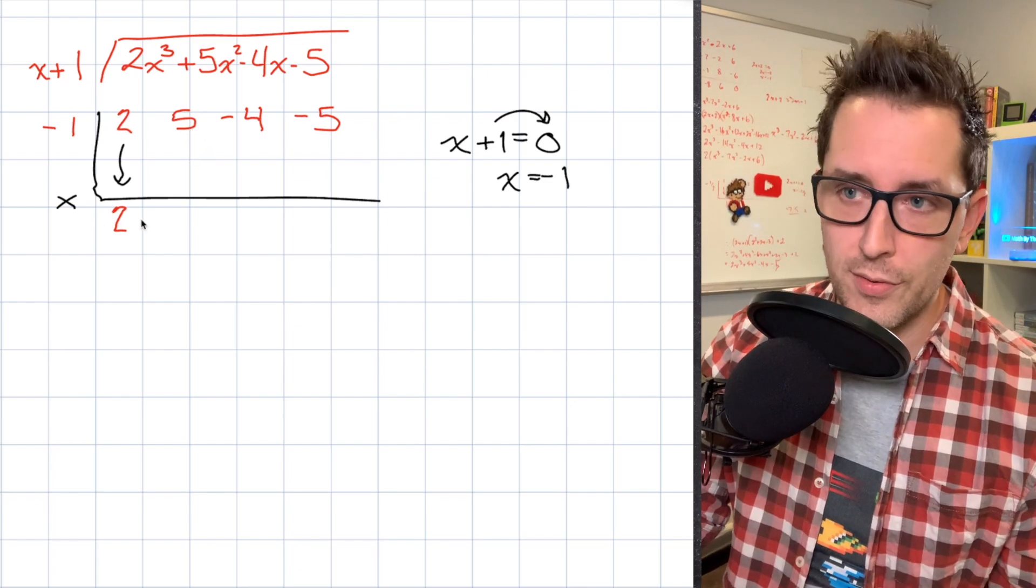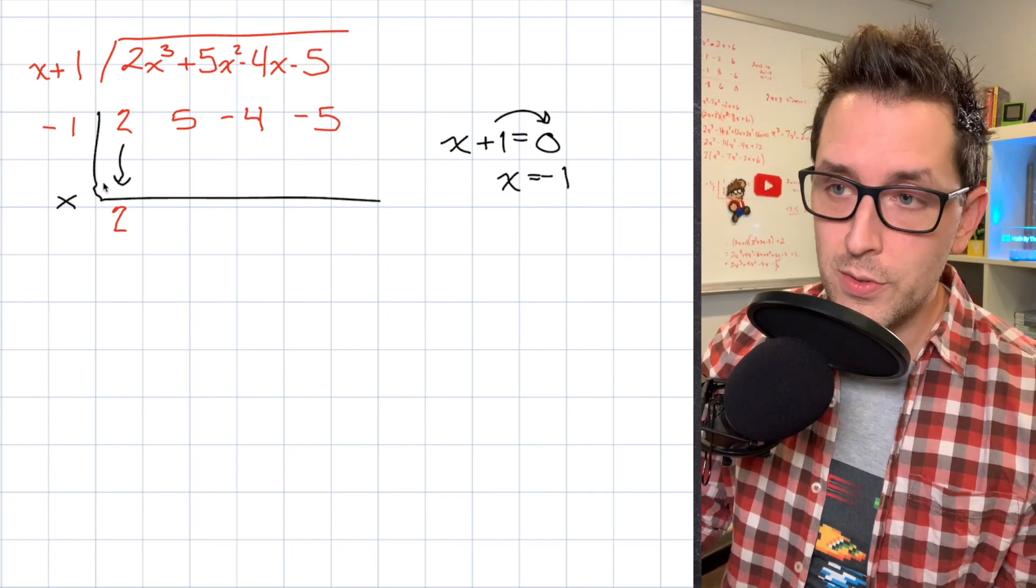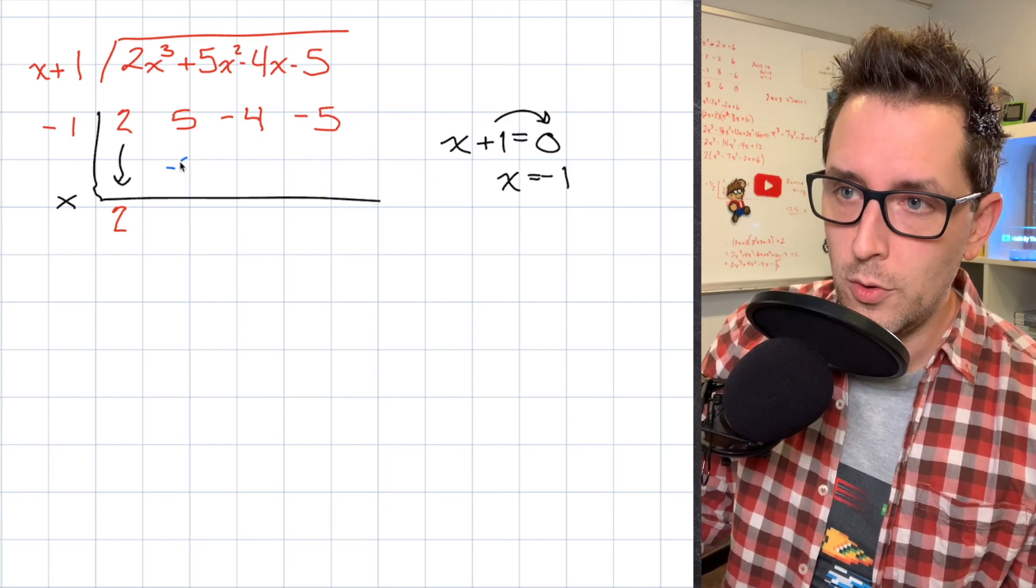So underneath that 5, I'm going to put whatever 2 times negative 1 is. So we know that 2 times negative 1 is going to be negative 2. So I'm going to place that right here.